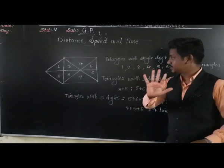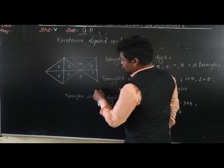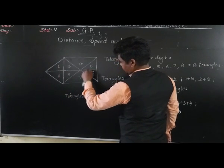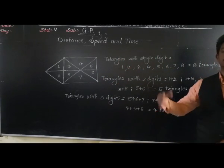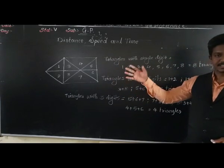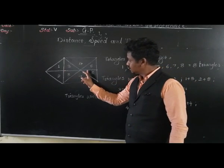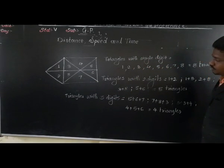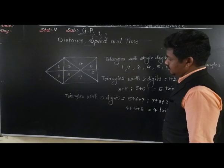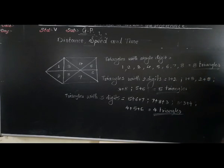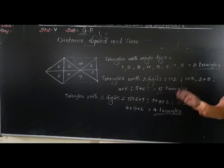Now, combination of 5 digits together — is there any forming a triangle? No. We can check 6 digits, 7 digits, up to all 8 digits. No new triangles. So total: 8 triangles with 1 digit, 5 triangles with 2 digits, and 4 triangles with 3 digits. That is 8 plus 5 equals 13, plus 4 equals 17. Total 17 triangles.